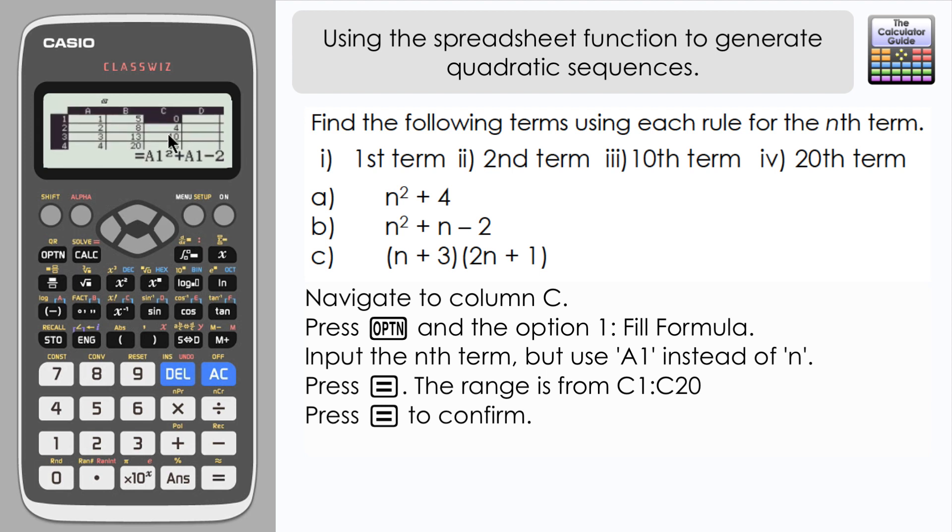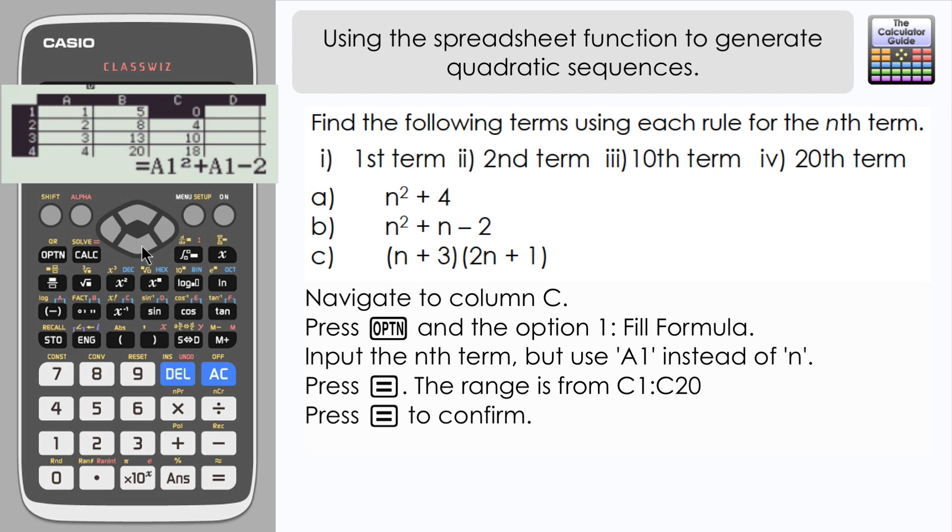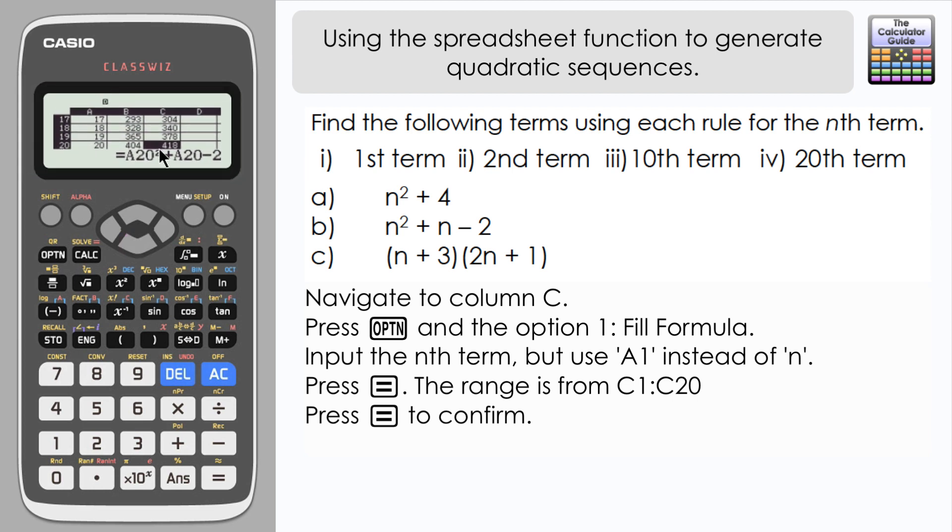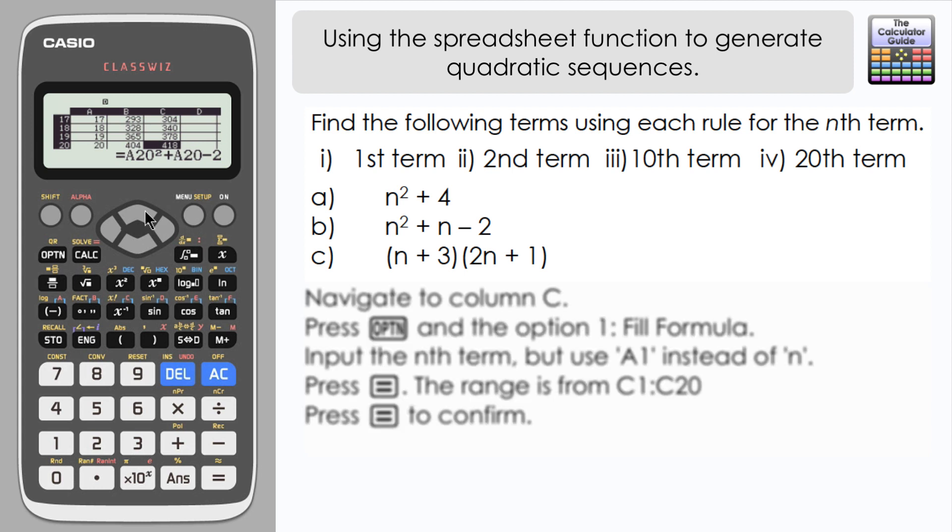And here we have the sequence again. Just double-check that's correct. So the first term is 0 and the second term is 4. And again we can examine the sequence as we scroll down. Tenth term is 108, and then navigate down to the bottom term that we've got there. 20th term is 418.